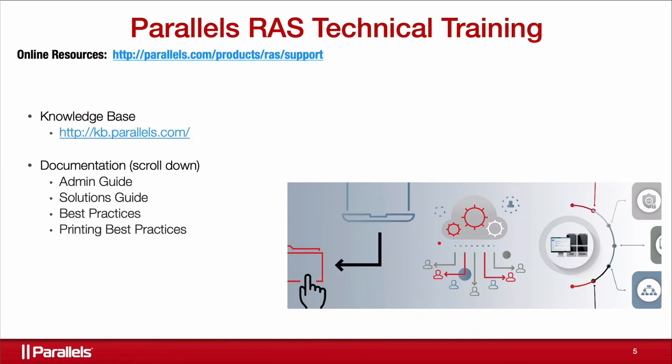There are additional resources available at parallels.com/product/RAS/support. I usually go to parallels.com, click Support, then RAS. On that page is the Parallels knowledge base for searching topics and troubleshooting. There are links to contact support, and if you scroll to the bottom, there's a link for technical documentation and resources — the admin guide, solutions guide, best practices, printing best practices, architecture references, and more.